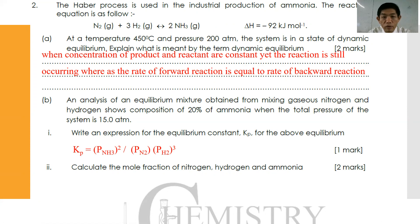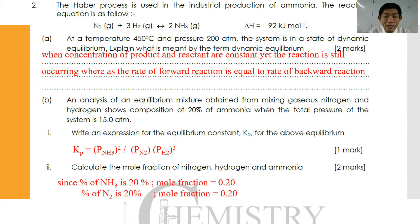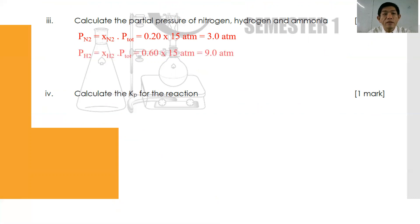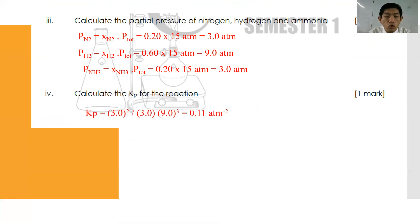Write the expression for the equilibrium constant Kp: Kp = P(NH₃)² / [P(N₂) × P(H₂)³]. Given that ammonia is 20% of the mixture, hydrogen and nitrogen together make 80%, in a ratio of 1:3 — so nitrogen mole fraction is 0.2 and hydrogen is 0.6. The partial pressures are: P(N₂) = 0.2 × 50 = 10 atmosphere, P(H₂) = 0.6 × 50 = 30 — wait, using 15 atmosphere total: P(N₂) = 0.2 × 15 = 3 atmosphere, P(H₂) = 0.6 × 15 = 9 atmosphere, P(NH₃) = 0.2 × 15 = 3 atmosphere. Then Kp = (3.0)² / [3.0 × (9.0)³] = 0.11 atm⁻². Be aware of the units used.